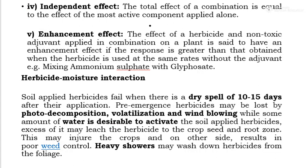The independent effect means the total effect of the combination is equal to the effect of the most active component applied alone — both chemicals have independent effects. The enhancement effect refers to when a herbicide or non-toxic adjuvant applied in combination on plants shows a greater response than when the herbicide is used at the same rate without the adjuvant. For example, mixing ammonium sulphate with glyphosate increases its effect compared to application without adjuvants.